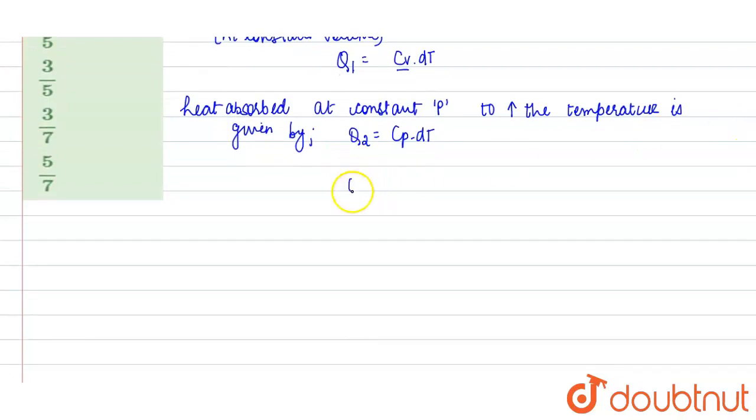So when you solve the ratio Q1 upon Q2, it will equal Cv dT upon Cp dT. dT will get cancelled, so it will be the ratio of Cv upon Cp.